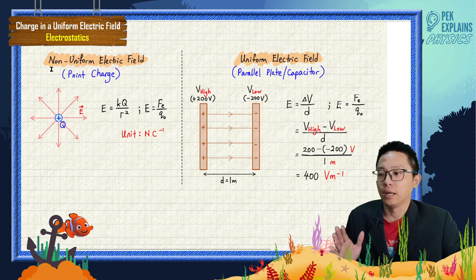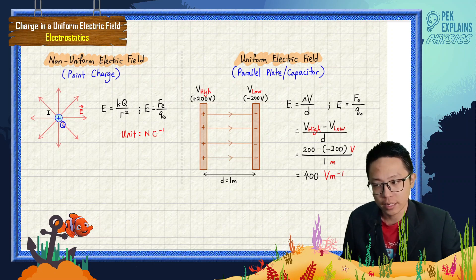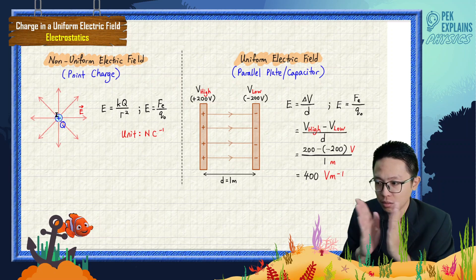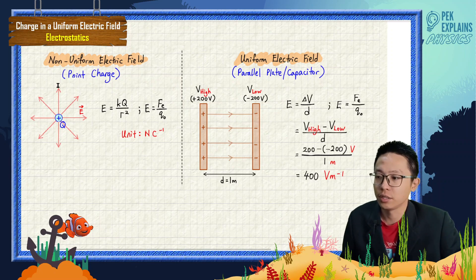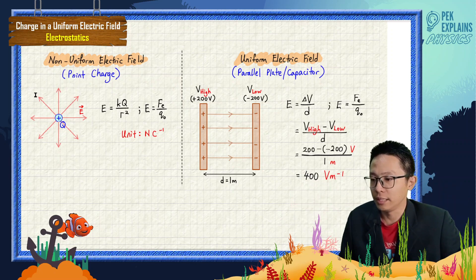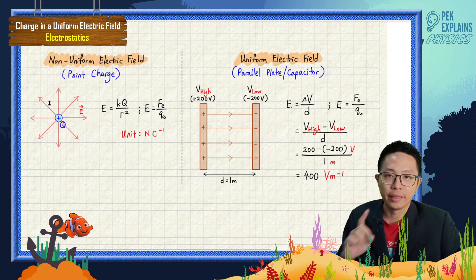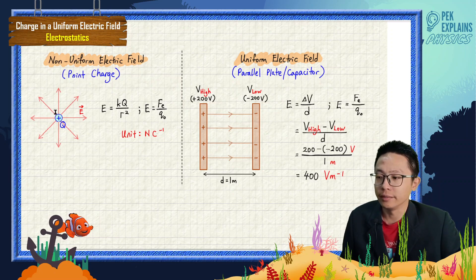To know the difference between non-uniform or uniform, you check with the electric field lines. For example, here the point charge — the electric field lines around the point charge are non-uniform. Why is it non-uniform? Because you look at the electric field lines nearer to the point charge, the electric field lines are closer to each other, but as you go away from the point charge the electric field lines diverge — they become further apart from each other.